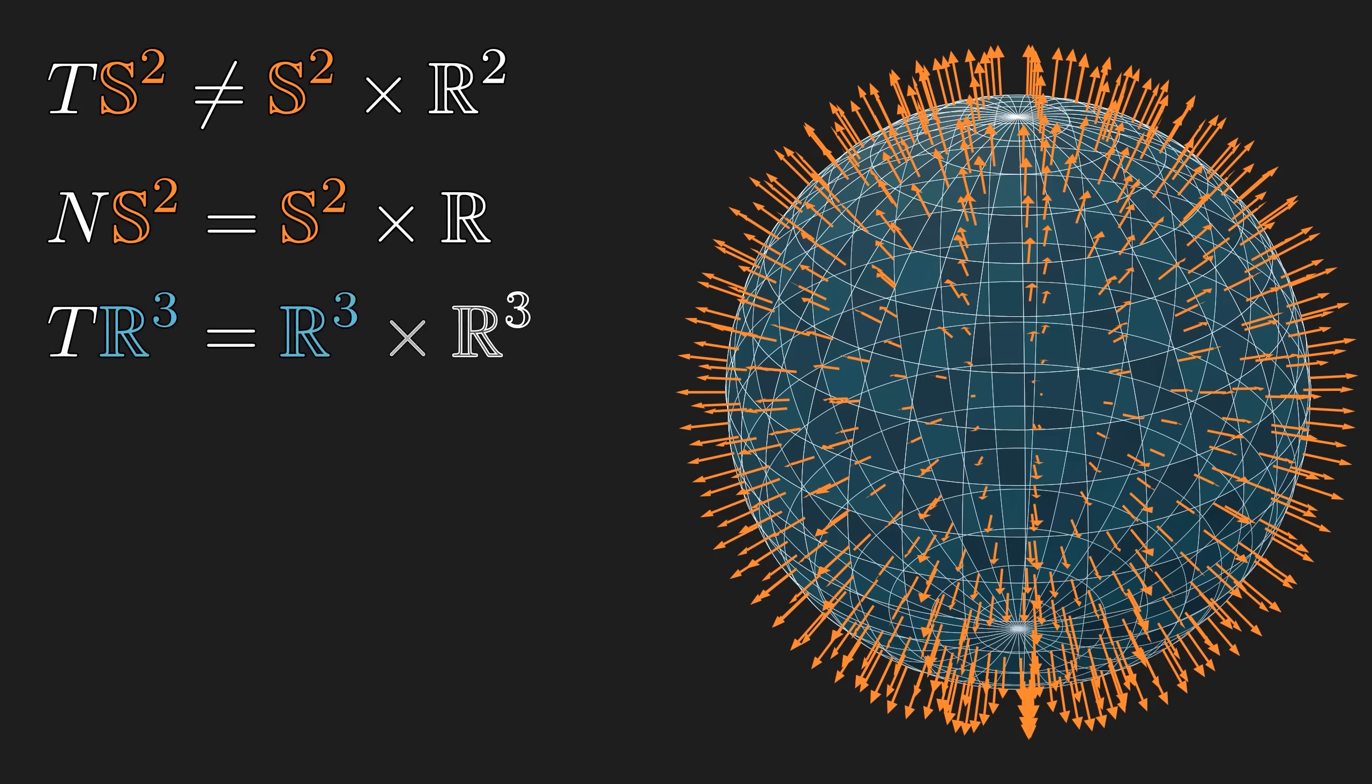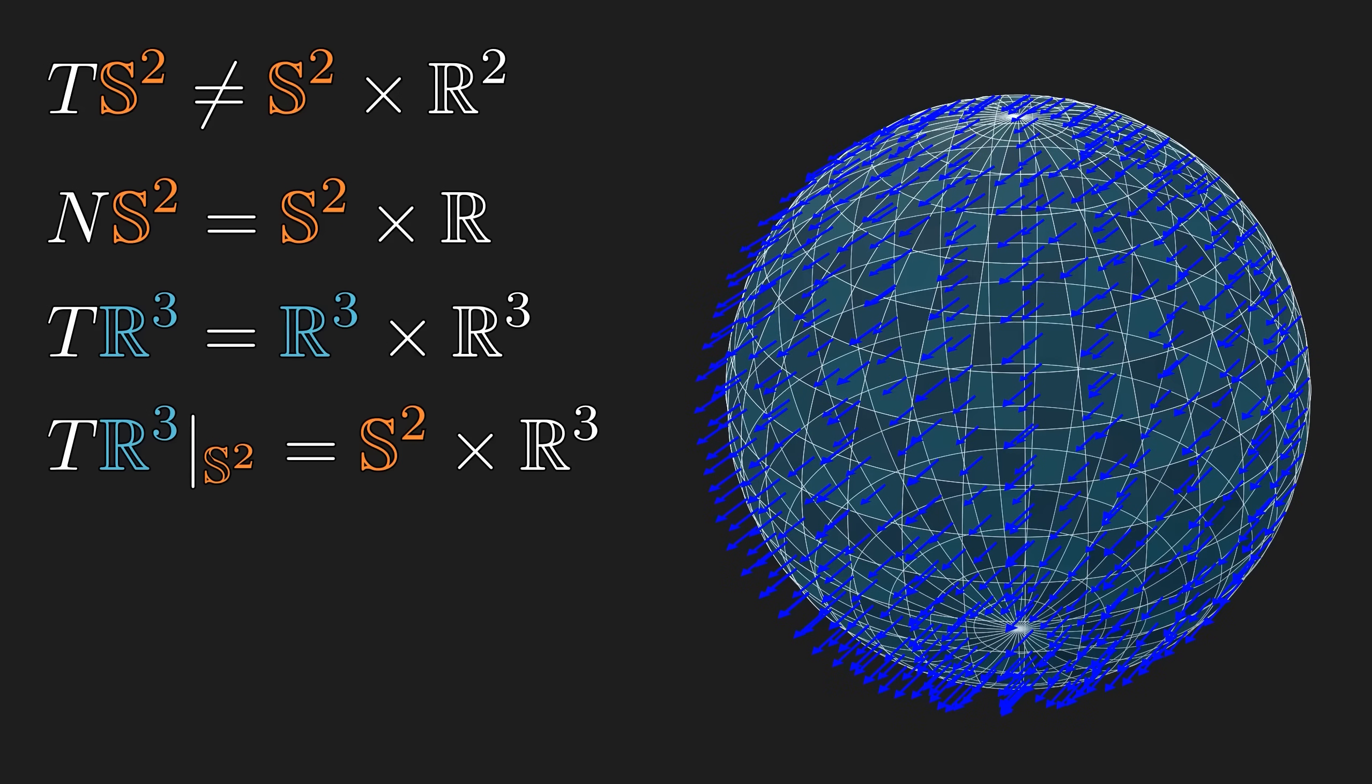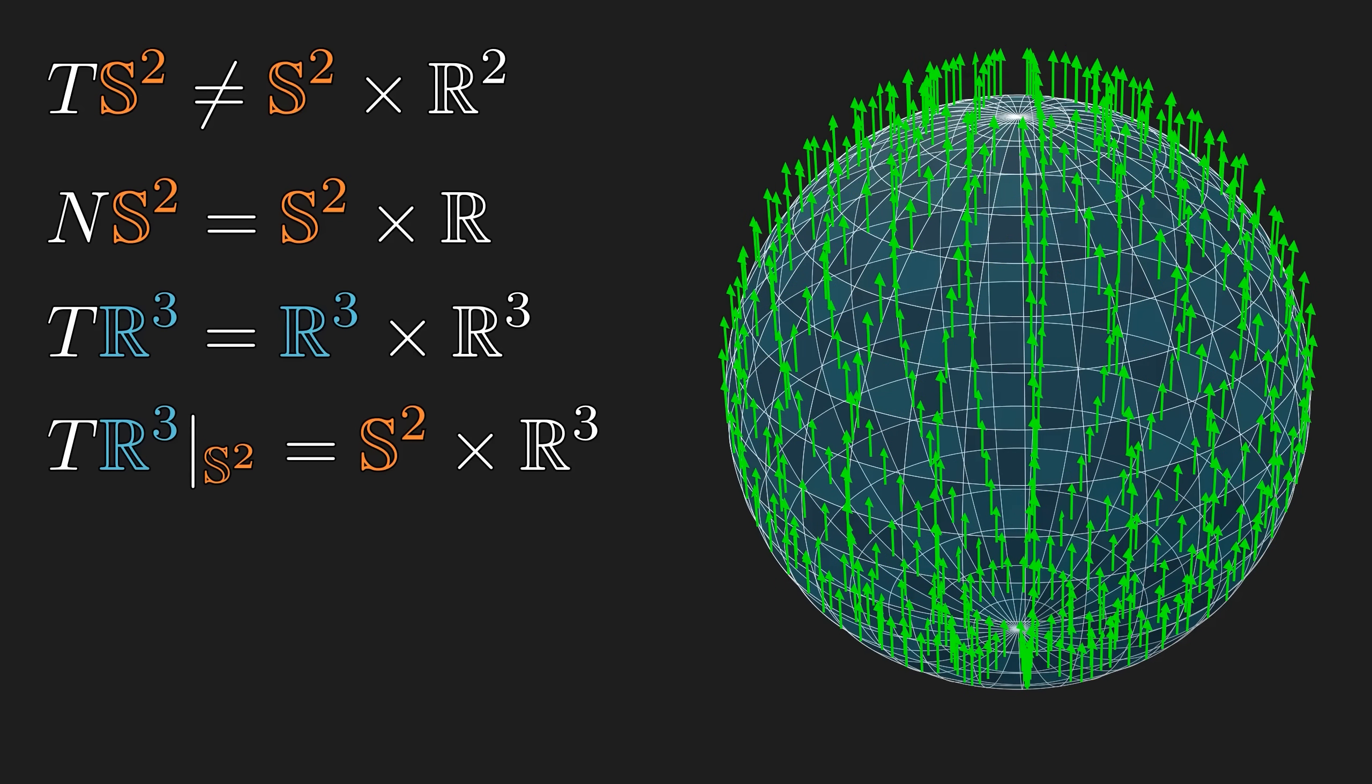Now, the tangent bundle of the ambient space, which is real 3D space, is automatically trivial. So, the three-dimensional bundle on the sphere, where the vectors can point in any direction in the 3D ambient space, is also a trivial bundle. The three independent, non-vanishing fields are simply the vectors in x, y, and z directions of the ambient space.